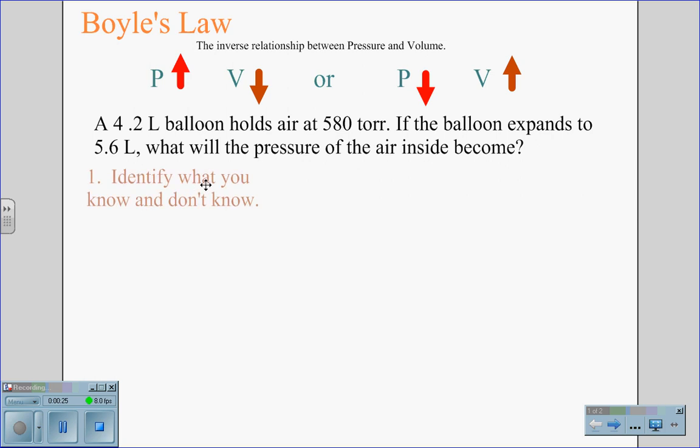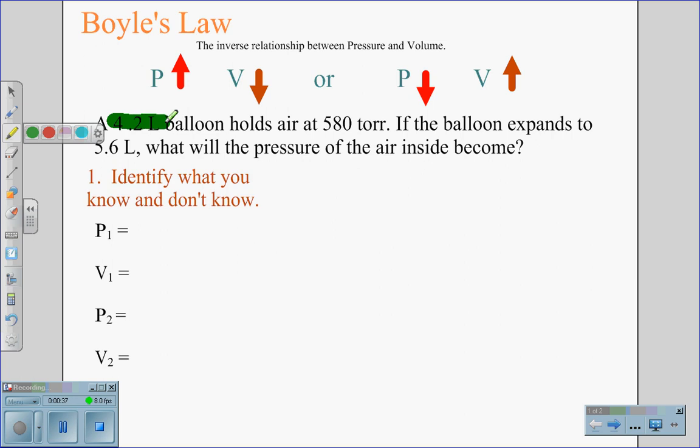First, we need to identify what you know and don't know. We're looking for P1, V1, P2, and V2. From the equation, we can see that we have a 4.2 liter balloon. Therefore, 4.2 liters is our initial volume.